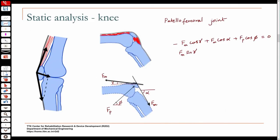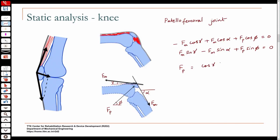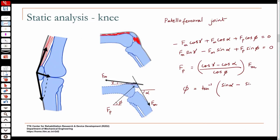Once you find fm, you can do an analysis at the patellofemoral joint. The second equation is fm·sin(gamma) − fm·sin(alpha) + fp·sin(phi) = 0. This gives you fp, the force at the interface between the patella and the femur, and the angle phi is tan⁻¹[(sin(alpha) − sin(gamma)) / (cos(gamma) − cos(alpha))].